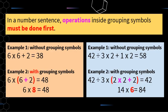Now we know what operations are — our four main operations: multiplication, division, addition, and subtraction — and we know what grouping symbols are. The main rule for today: in a number sentence, operations inside grouping symbols must be done first. Example one without grouping symbols: 6 times 6 is 36, plus 2 is 38. Example two with grouping symbols around (6 plus 2): do 6 plus 2 first — that's 8 — times 6 is 48.